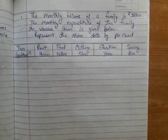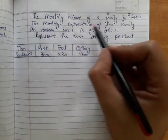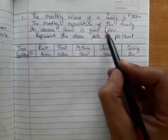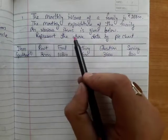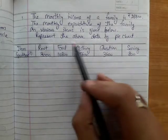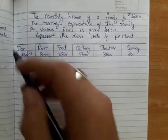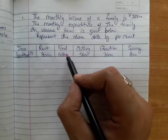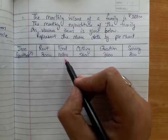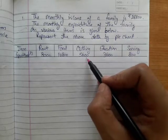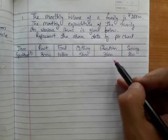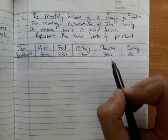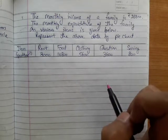First question of Exercise 24a: the monthly income of a family is rupees 28,800. The monthly expenditure of the family on various items is given below. We have to represent the data in a pie chart. The expenditures are: rent is 8,000, food expenses are 10,800, clothing expenses are 5,600, education 3,600, and savings 800.